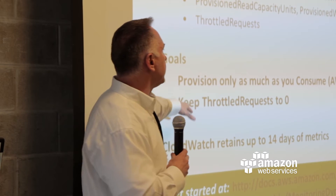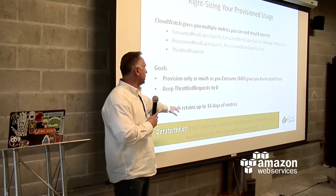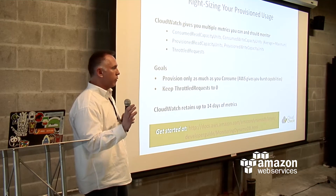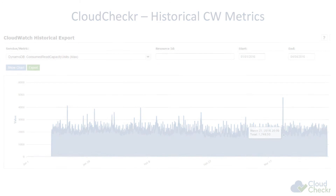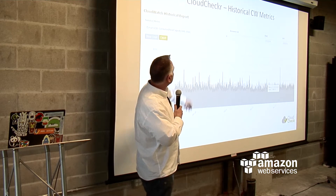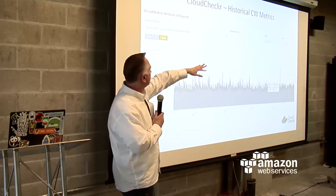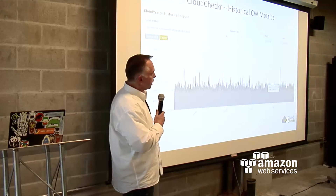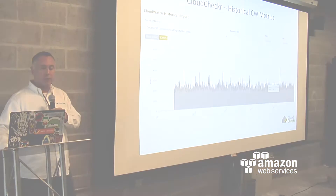The idea is to provision only as much as you consume and keep throttle requests as close to zero as possible. Note that CloudWatch retains up to 14 days of metrics, so if you really want to look at a longer term you have to be prepared for that. CloudChecker lets you view these metrics — you can pick DynamoDB consumed read capacities over a much longer period of time, seeing both average and max. You can pull your consumed, average, max, and provisioned, then compare them all so you have something you can actually make a choice on.